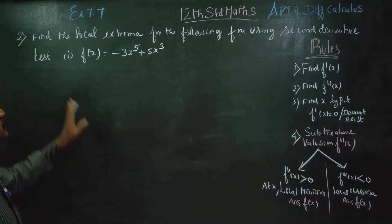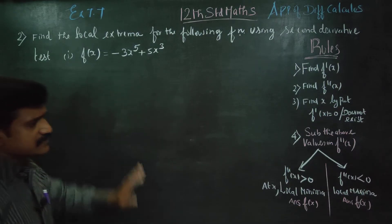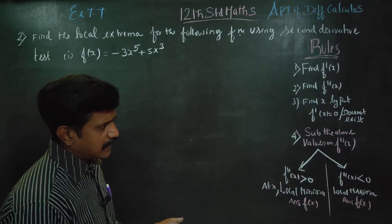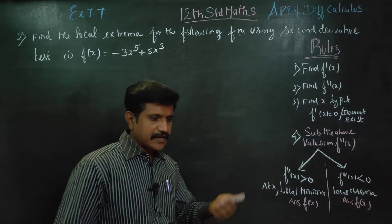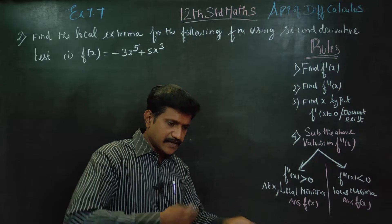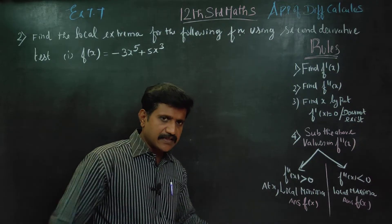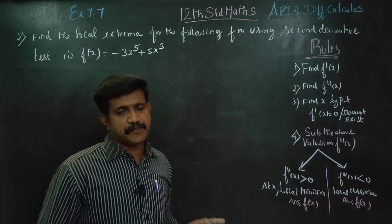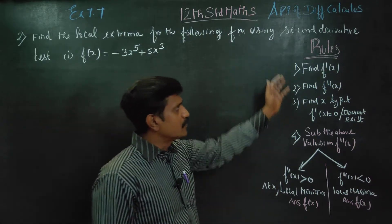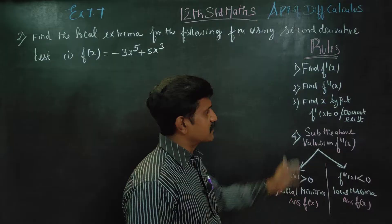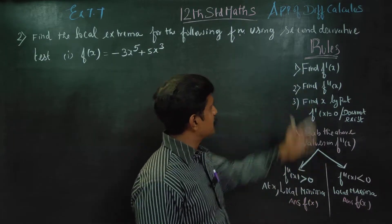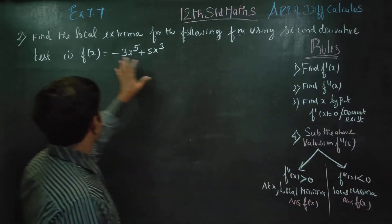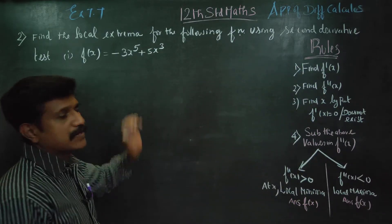The second derivative test involves checking increasing, decreasing, and value. These are the simple rules — just an abstract overview. When you look carefully, you will find some flexible steps.